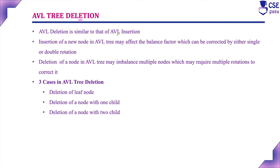AVL tree deletion is similar to AVL tree insertion. We have already discussed how to insert a new node into an AVL tree — inserting a new node affects the balance factor. If the balance factor is 0, +1, or -1 the tree is balanced; otherwise it is unbalanced. To convert an unbalanced AVL tree into a balanced one we apply a rotation, either single or double. Insertion imbalance can be corrected by a single or double rotation.